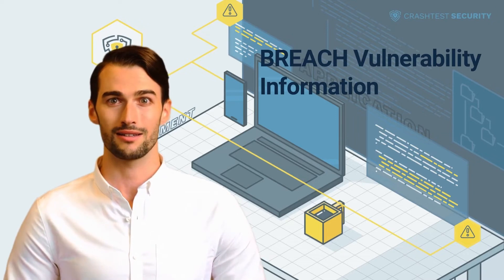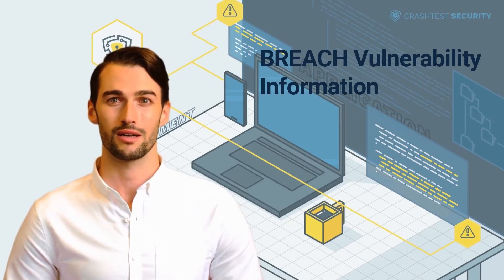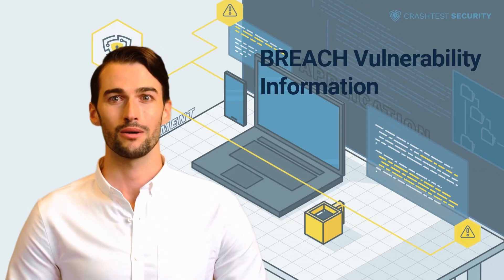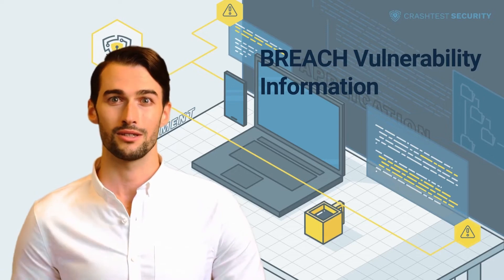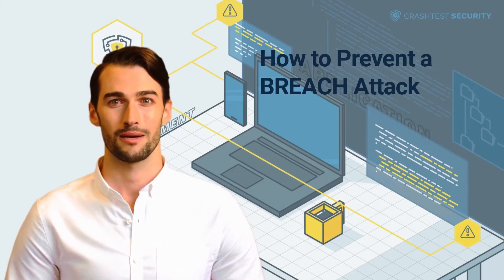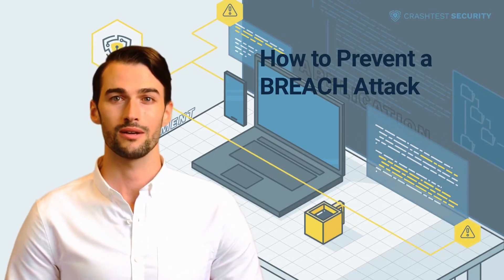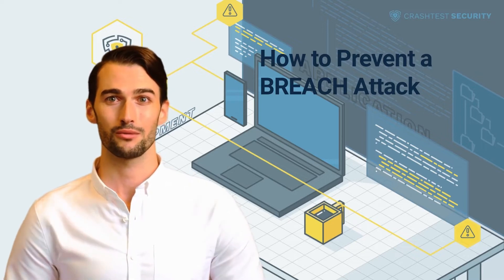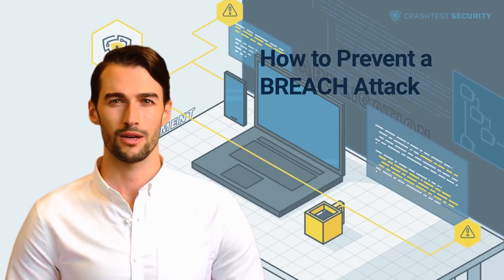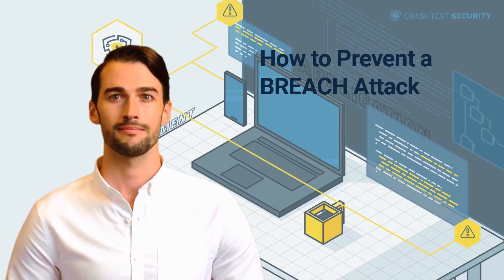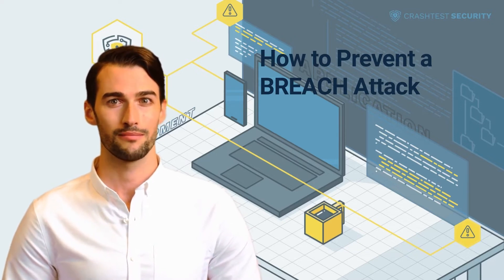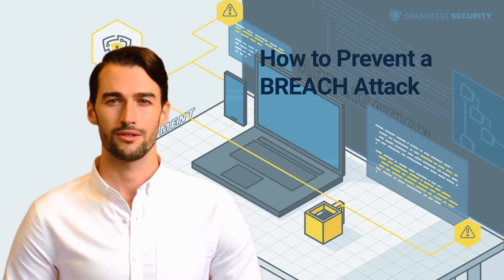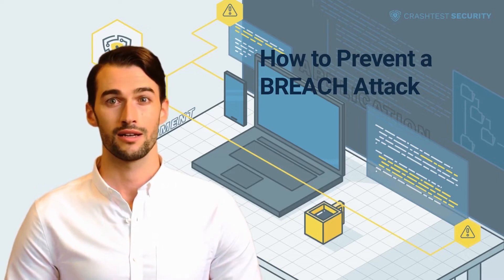A server vulnerable to BREACH attacks allows an attacker to decrypt cookie contents, such as session information, including login tokens, email addresses, and other types of sensitive data. This attack can be successfully executed in less than a minute. Unlike previous attacks such as BEAST or Lucky 13, this attack does not require SSL/TLS layer compression and can work against any cipher suite. For this reason, turning off TLS compression does not affect the possibility of a BREACH attack. The attack is easier to execute against stream ciphers because the response size is easier to establish; however, against block ciphers, attackers must work on aligning the output to the ciphertext blocks more precisely.